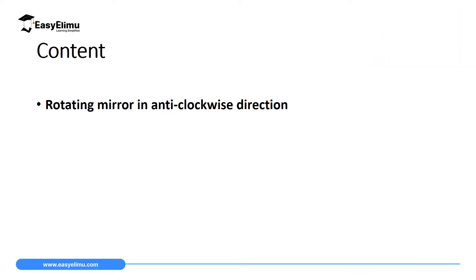By the end of this lesson, I expect you to be able to prove using ray diagrams and the laws of reflection that when a mirror is rotated at an angle theta in an anticlockwise direction, the reflected ray will rotate twice the angle through which the mirror is rotated.